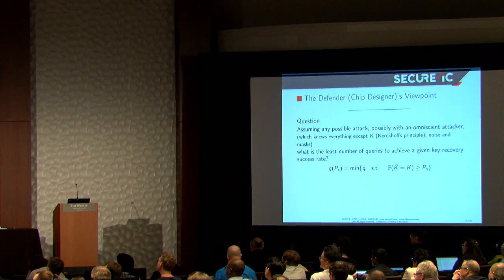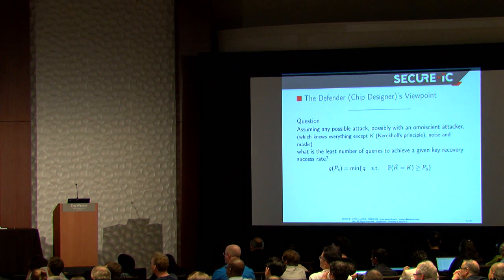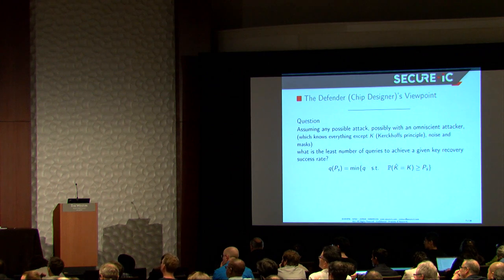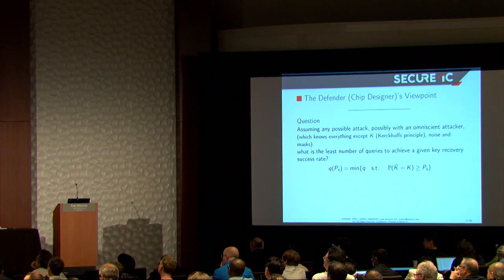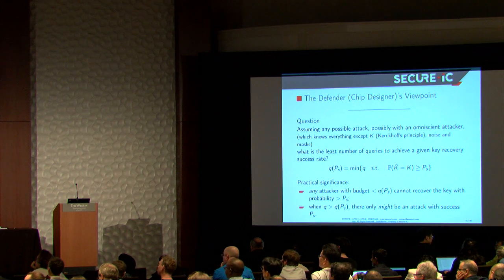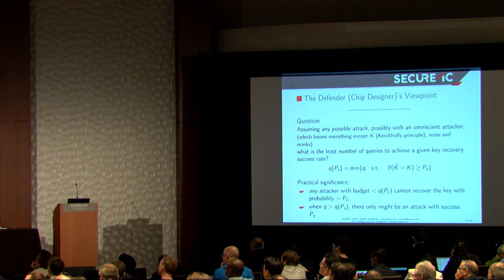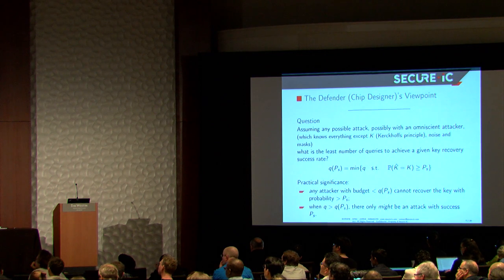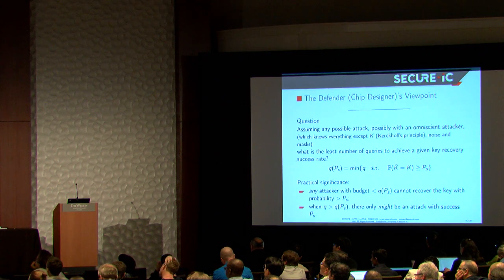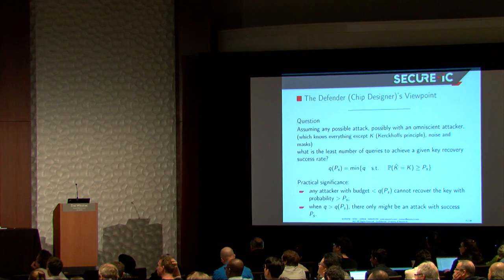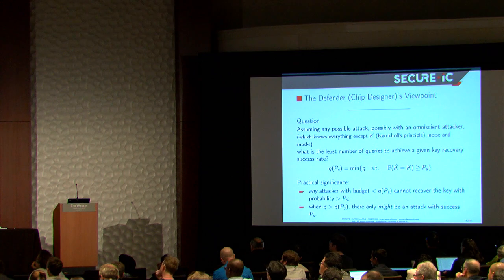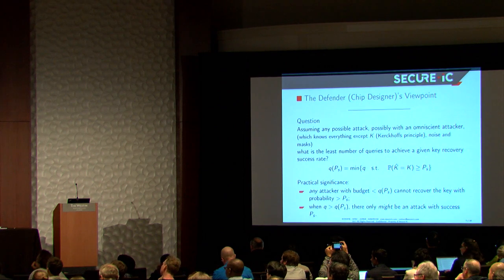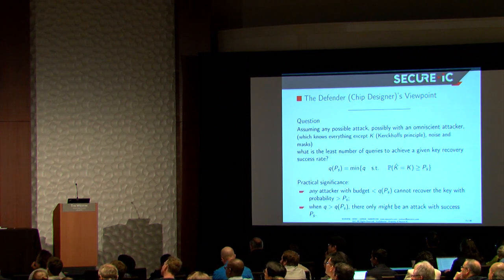And so the question is, what is the least number of queries Q such that the probability to recover the key is greater than a given value, which we will fix - 99%, 99.9%, something like this. So why is this important? Because we know that no attacker will manage to extract the key with fewer than Q of a PS traces. And actually, we will not even be sure that if the number of trace is more than that, that there is an attack. Maybe, maybe not. It will depend on the way we will compute this bound here.